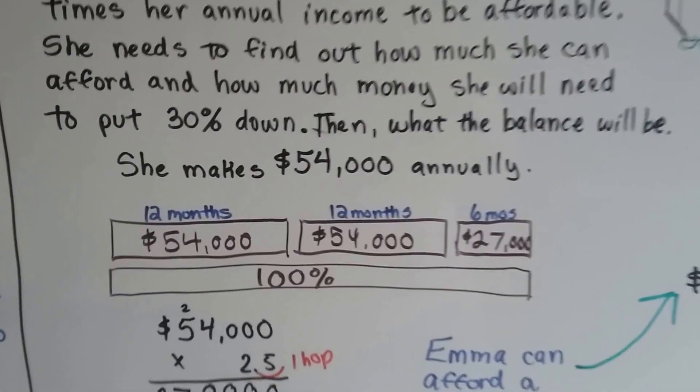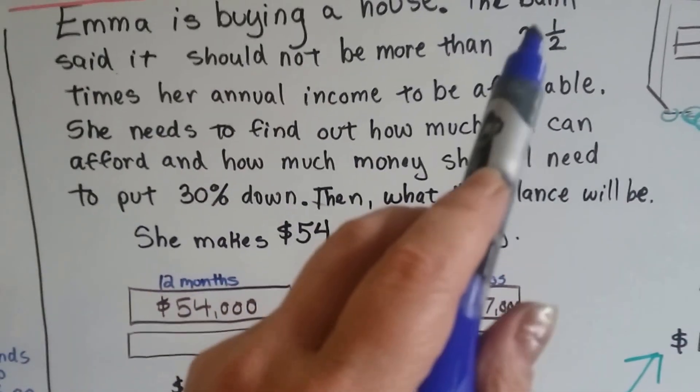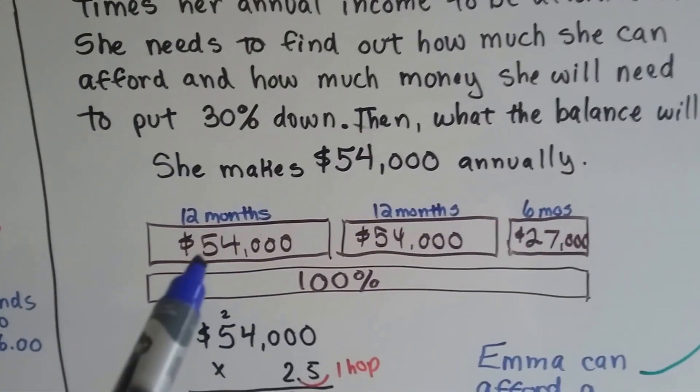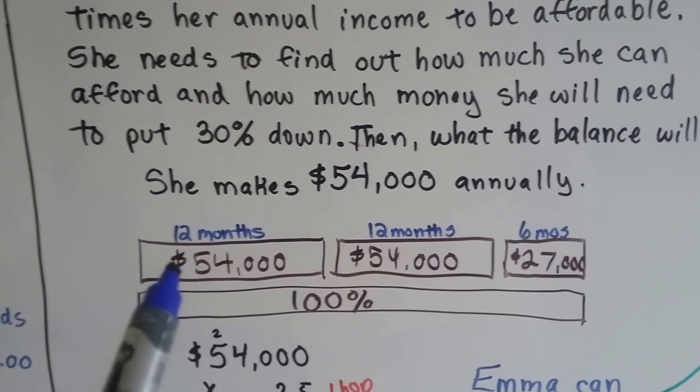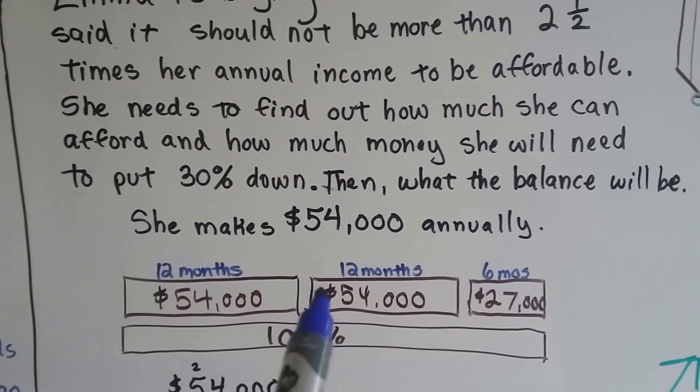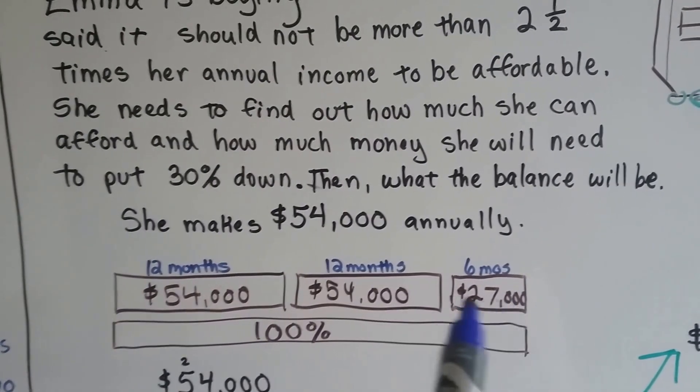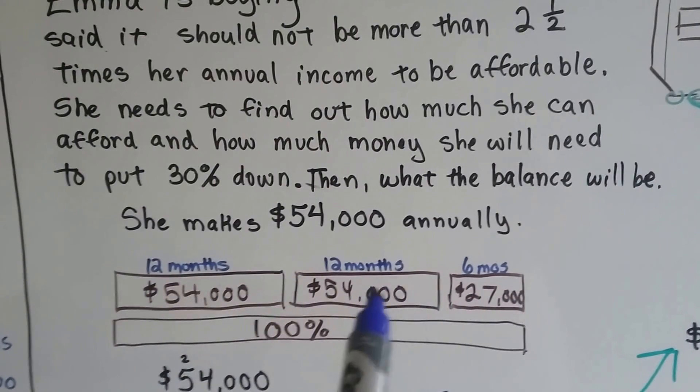Well, she makes $54,000 annually, and she needs to figure out what 2.5 times that is. So, $54,000 is one time, another $54,000 is another time, and then a half of $54,000 would be $27,000 if you divided it by 2.